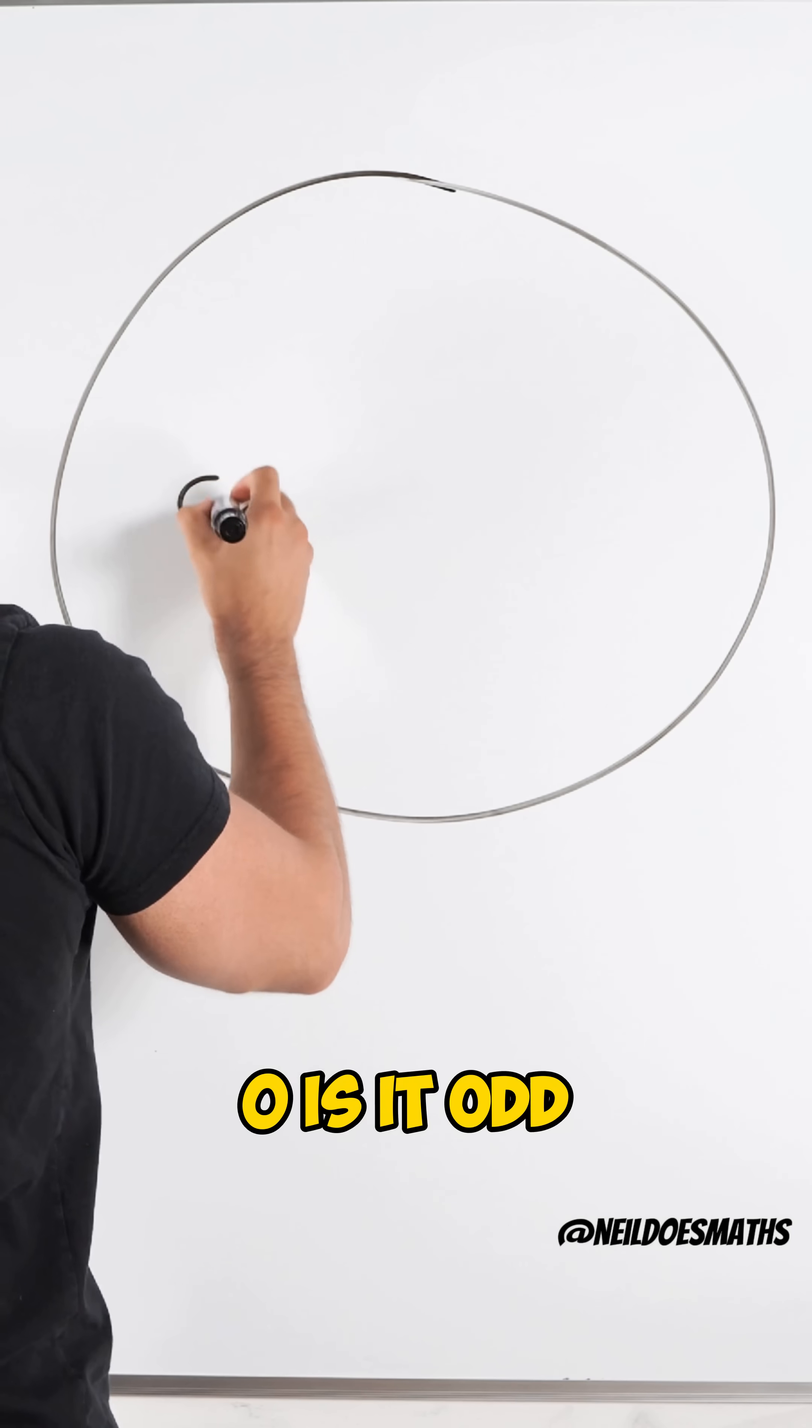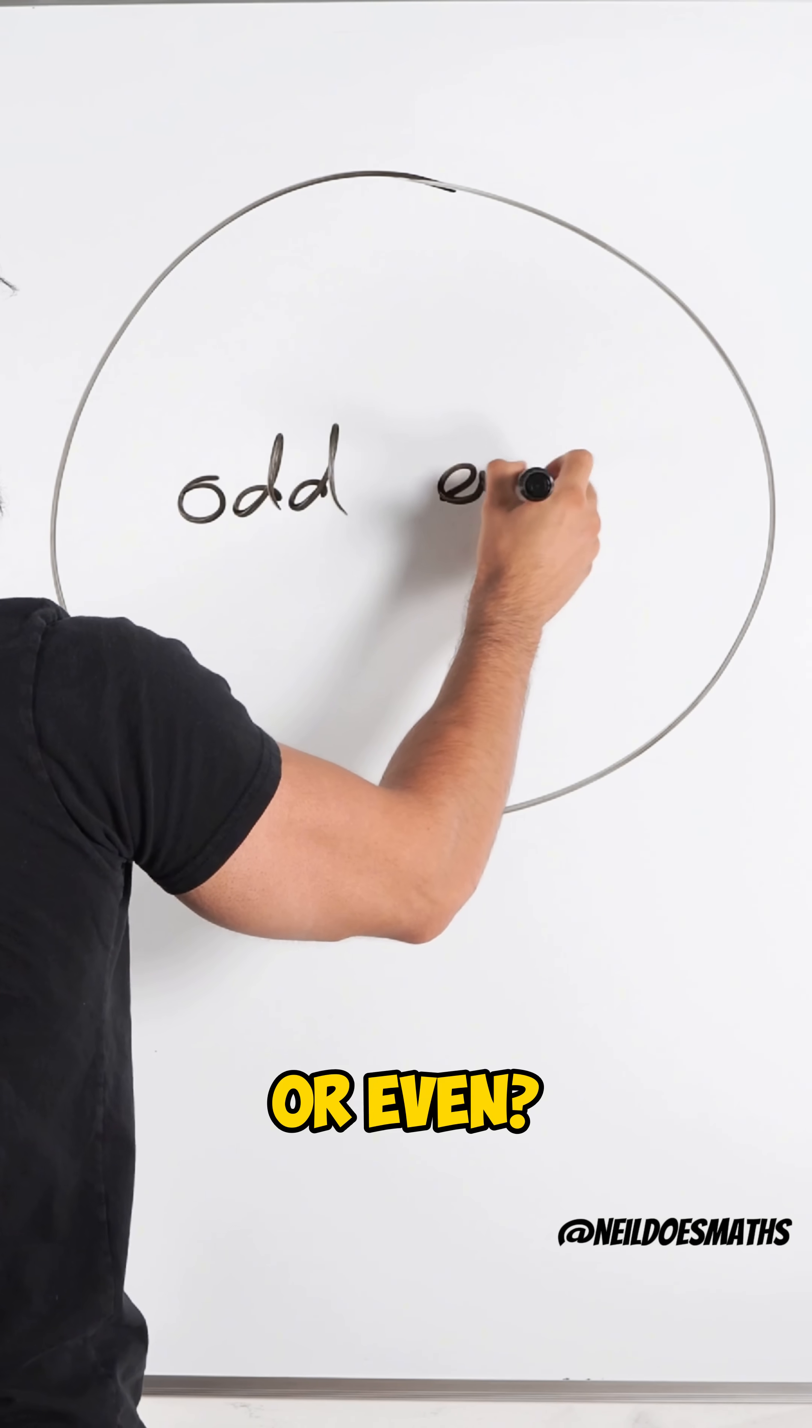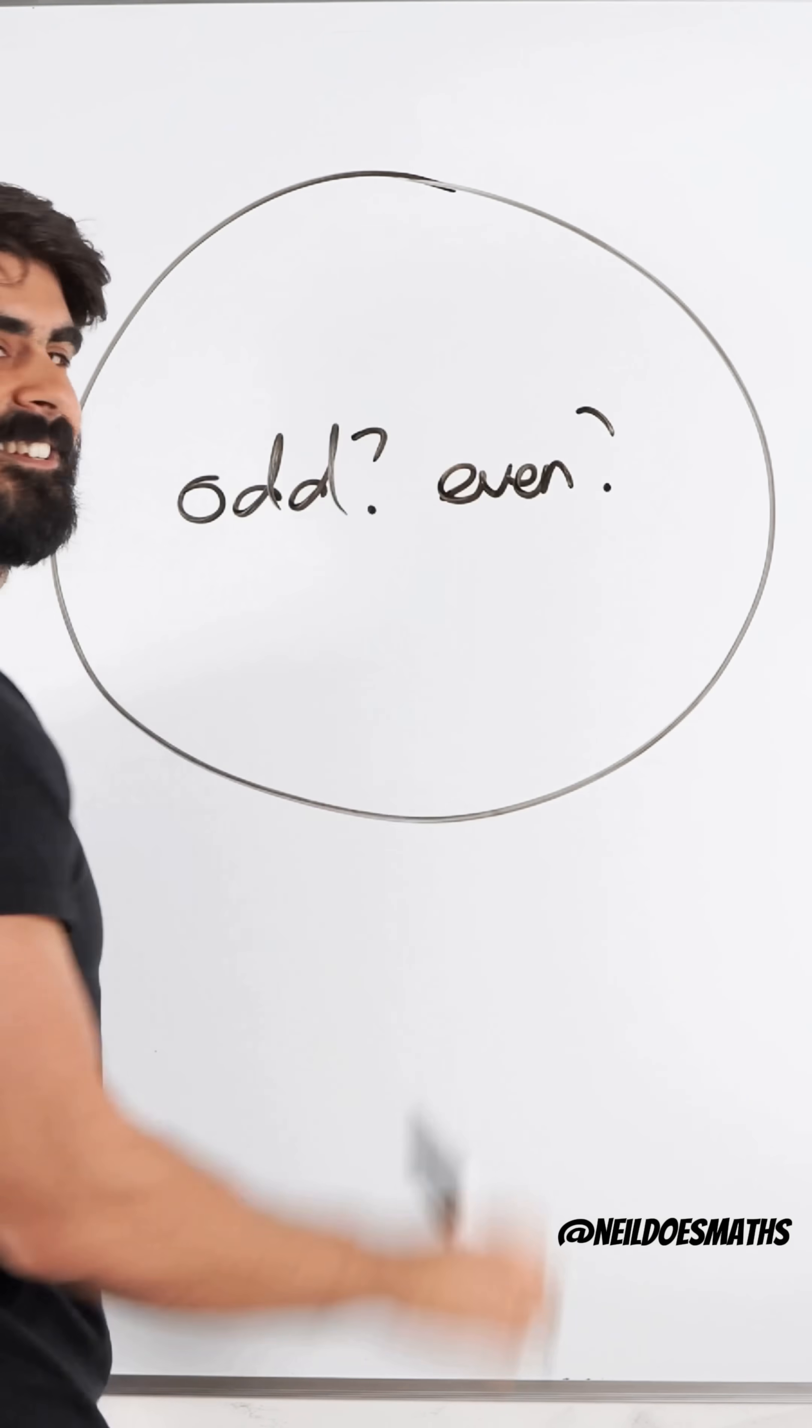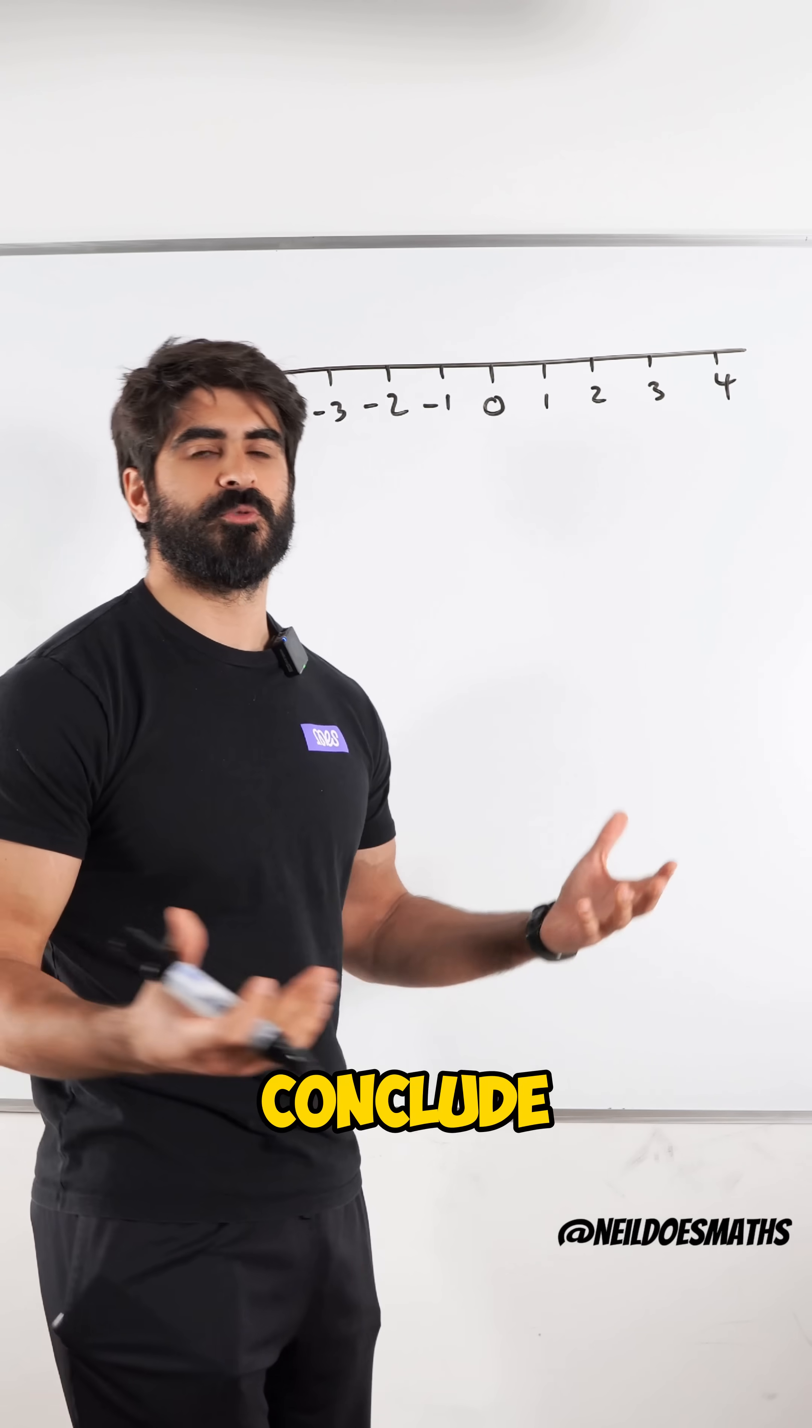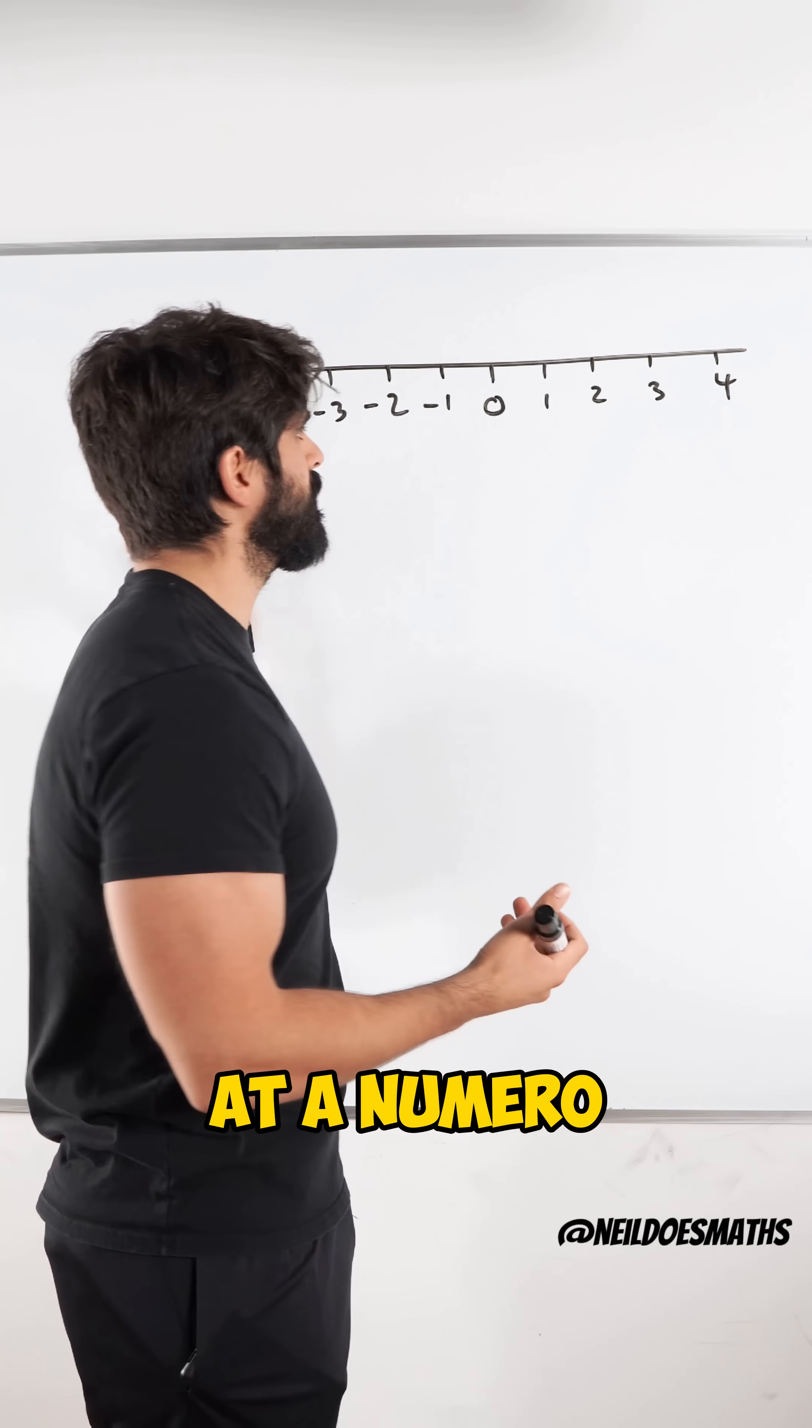Zero. Is it odd or even? Let's take a look. The first way we can conclude whether it's an odd or even number is by looking at a number line.